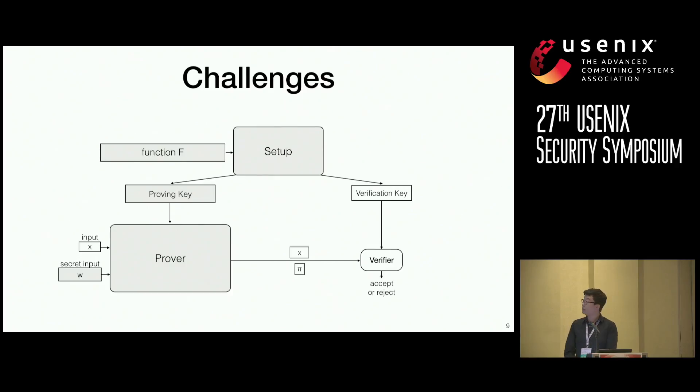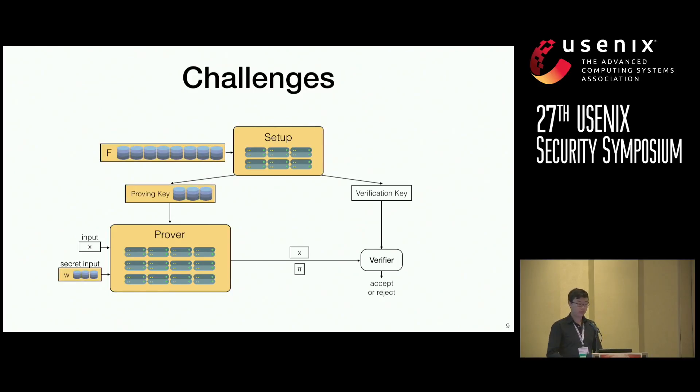So take this diagram of a ZK-SNARK protocol, and I want to point out that the verifier here is extremely small and cheap to run. Therefore, we're going to turn our attention to the setup and the prover. At first glance, we'll want to spin up a cluster of machines and run the setup and prover on it. Next, we'll want to use a distributed data structure to represent our public function f, our proving key, which we said was large, and our secret input. This looks all right. However, it's not.